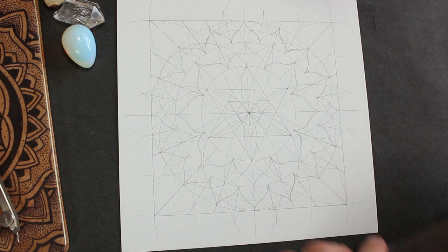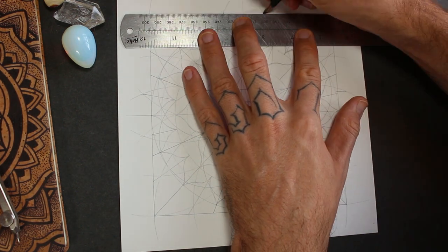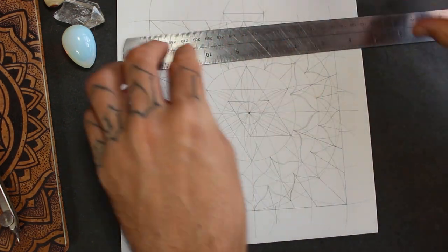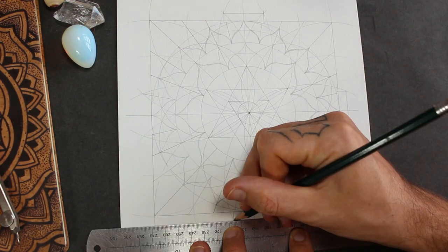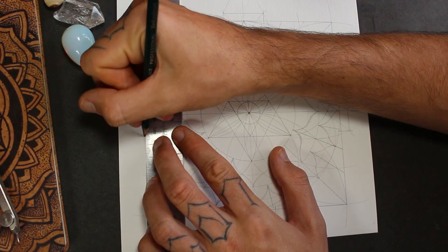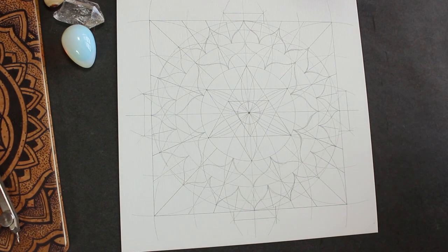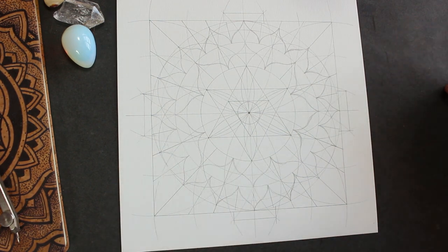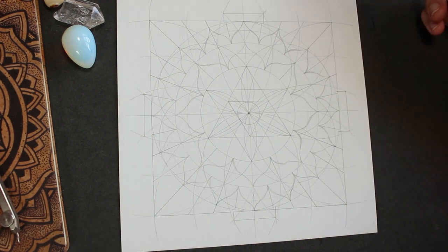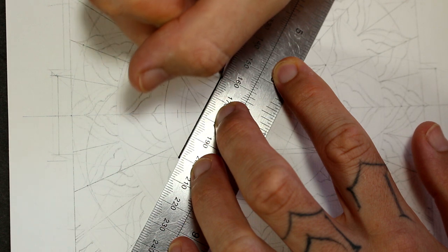And then what I'm going to do is connect those two intersections together. It might be kind of hard to see the symbol through all this chaos, all these construction lines. That is the basic construction of the Yantra. Now I'll move on to inking the drawing.